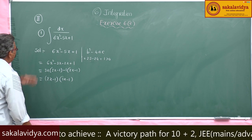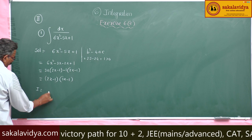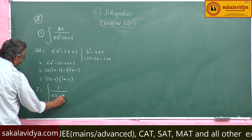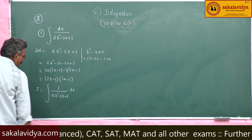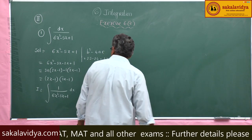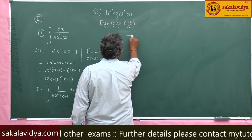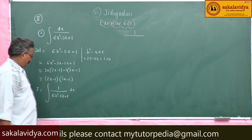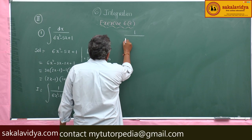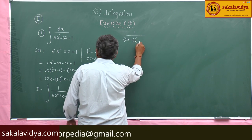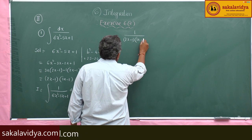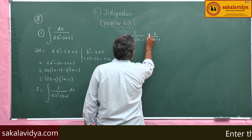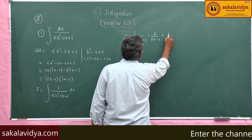Now, the integral I = ∫1/(6x² - 5x + 1) dx. The partial fractions of 1/(6x² - 5x + 1) = 1/((2x-1)(3x-1)) are of the form A/(2x - 1) + B/(3x - 1).